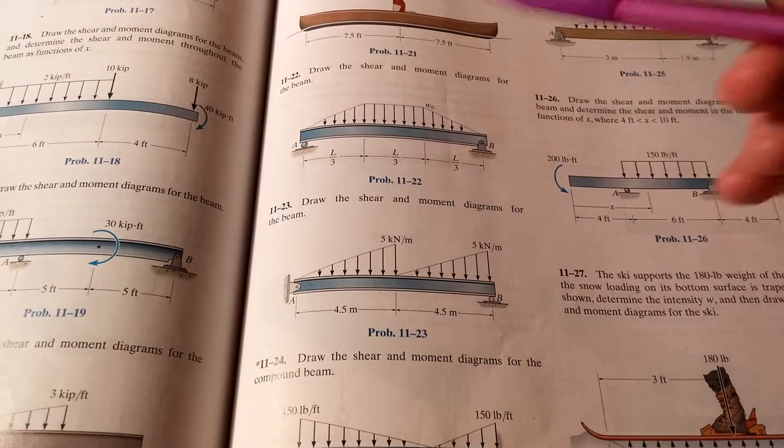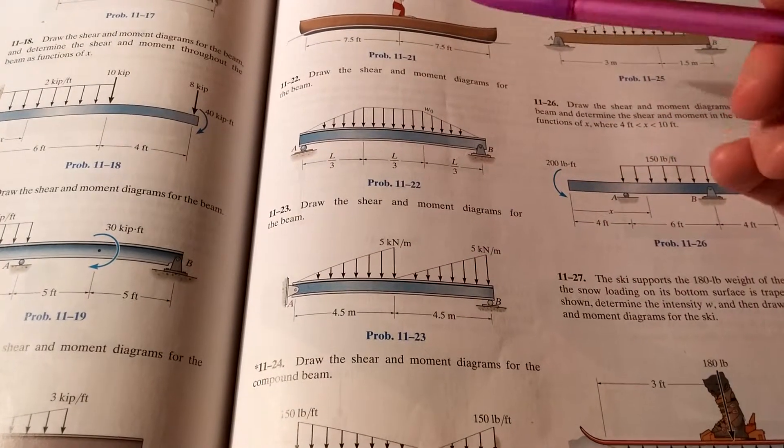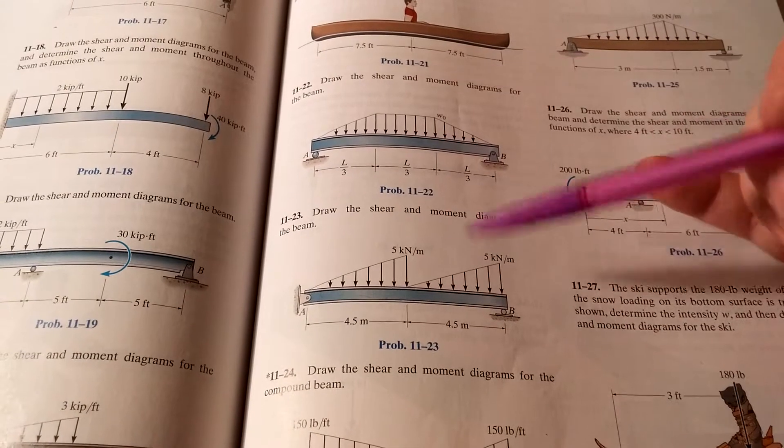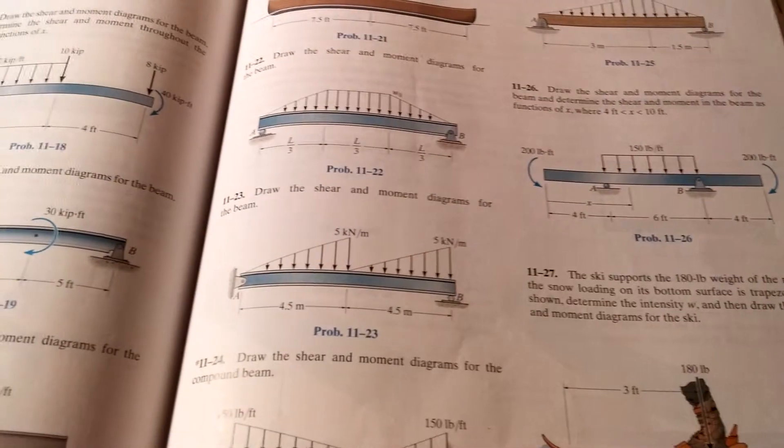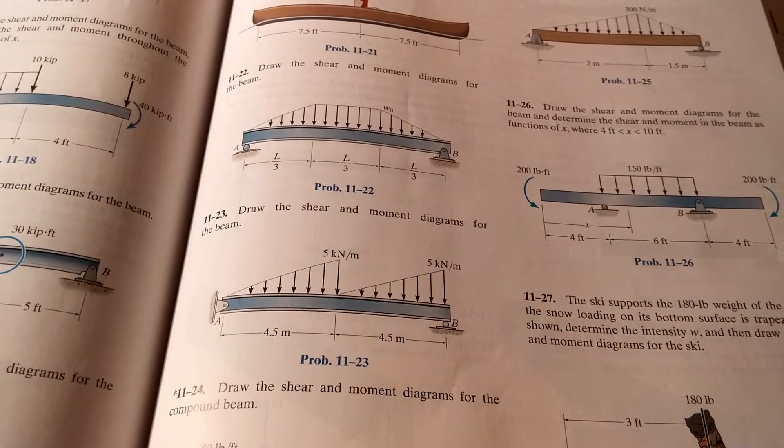We're going to have AY and AX, but the X doesn't matter because it's going to be zero. So we have AY, we have BY, and then to find each of those triangular intensity forces, we have to multiply the height times one-half the base, so the area of a triangle.